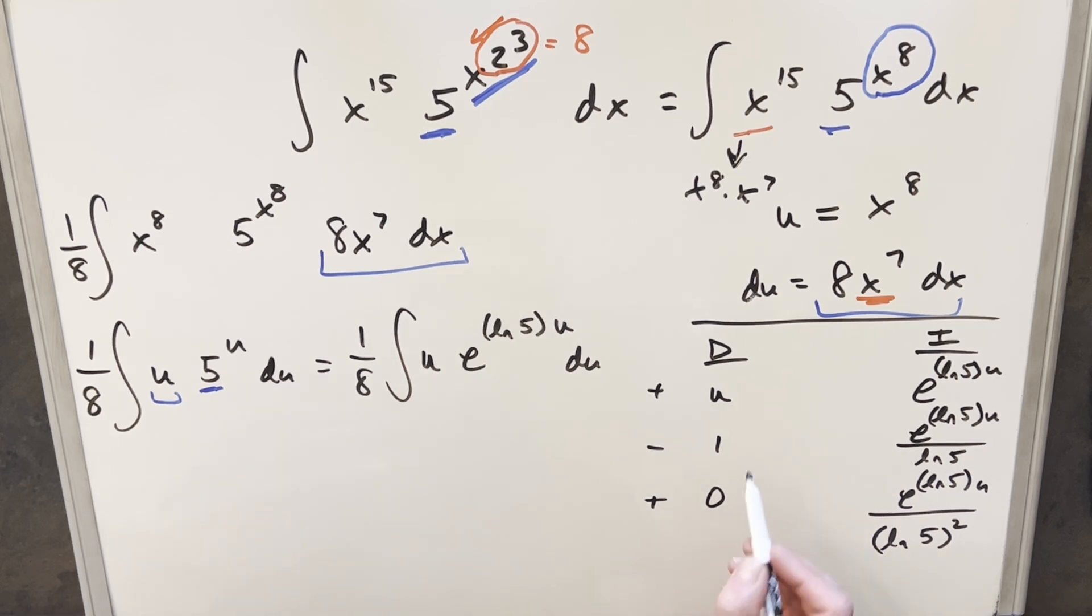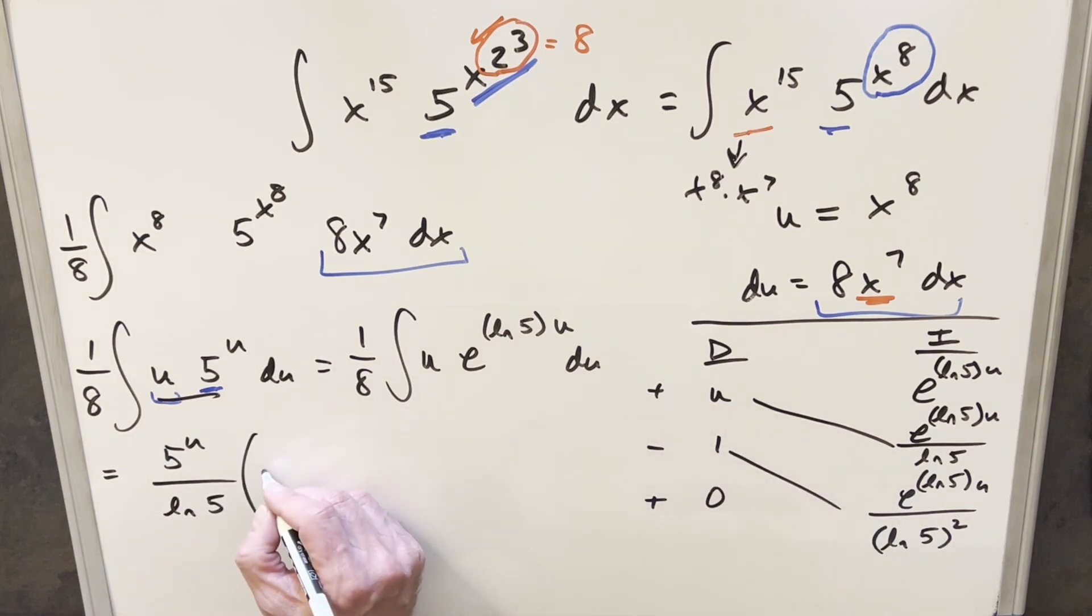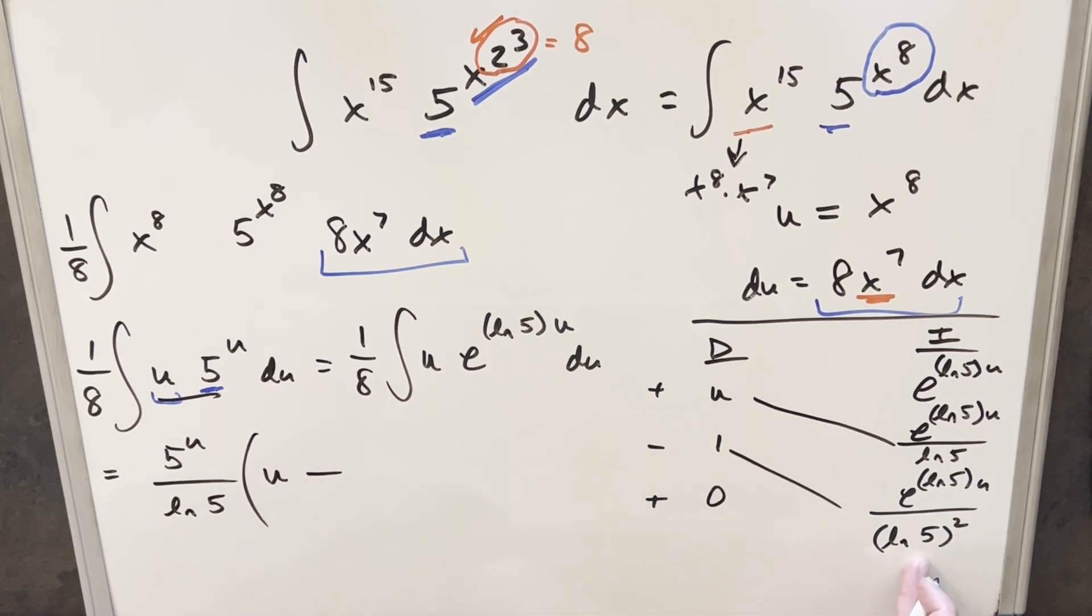So then we're going to have part of our solution here on the diagonals. So when I rewrite this, we actually have something in common. We've got the e to the ln 5 to the u and ln 5. I'm going to actually factor that out, but when I do that, I'm going to put it back into this form. So I'm going to write this as 5 to the u, and we'll factor out an ln 5. And then here for this first piece, we still have this u here, minus, and then we're going to have an extra ln 5 here, so we have the ln 5 squared. This is going to be 1 over ln 5. And let me just bring down this 1/8 that we have in front here, so we'll put that right in front.